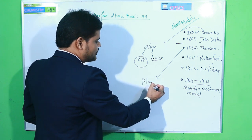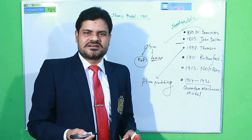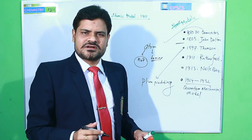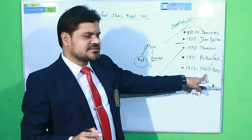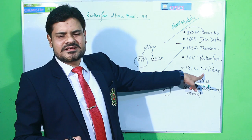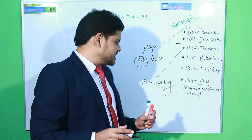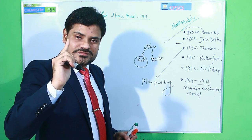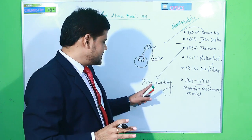After discovering the electron, Mr. Thomson submitted a model called the plum pudding model. In our syllabus, two models are most important: Rutherford and Niels Bohr. Before these, Thomson — when he discovered the electron — said the atom is divisible and submitted the plum pudding model.